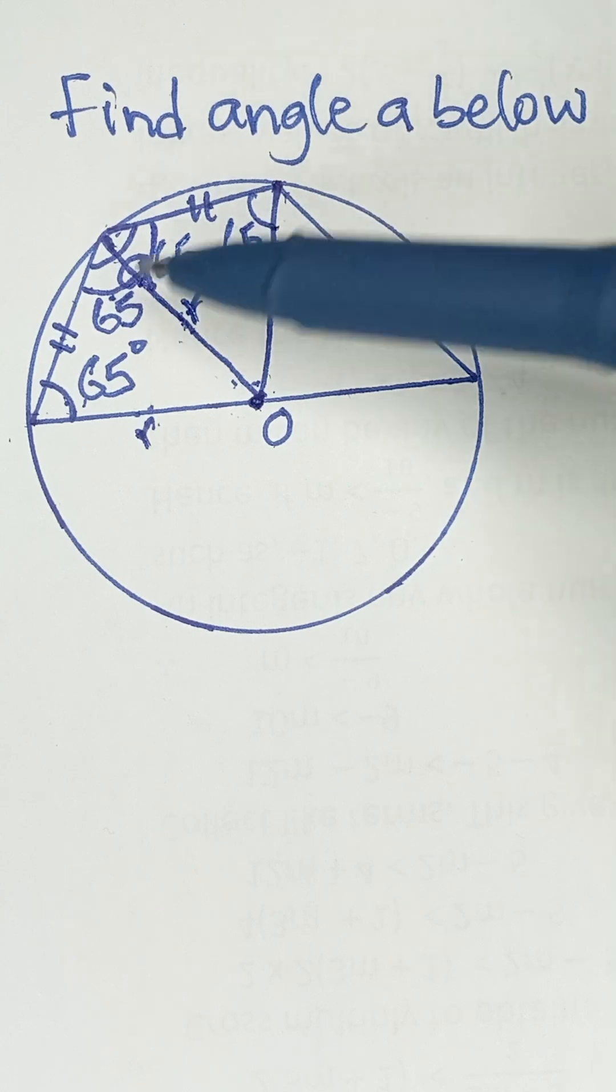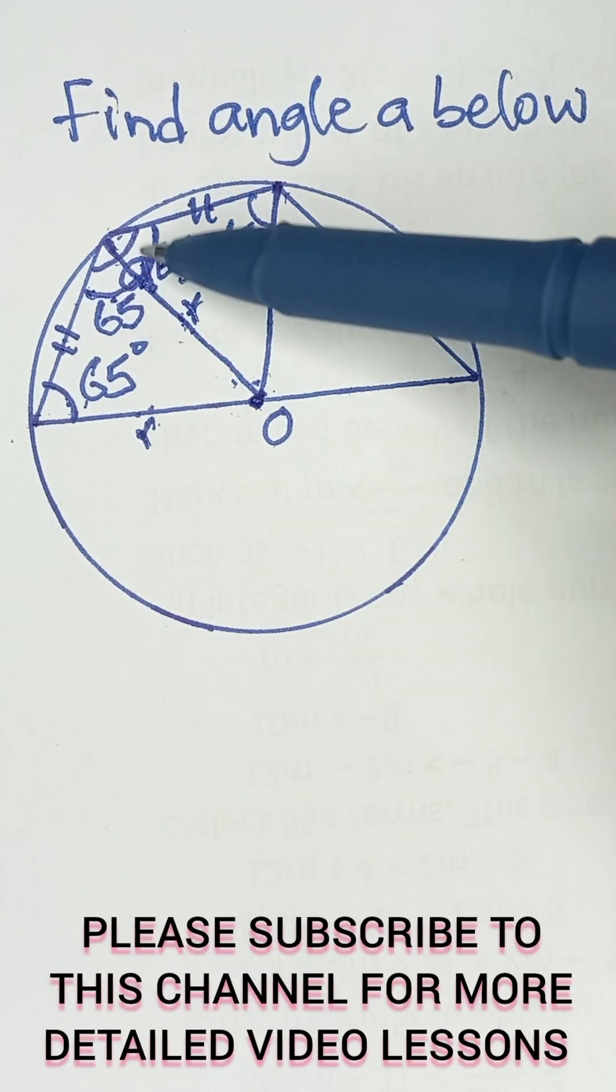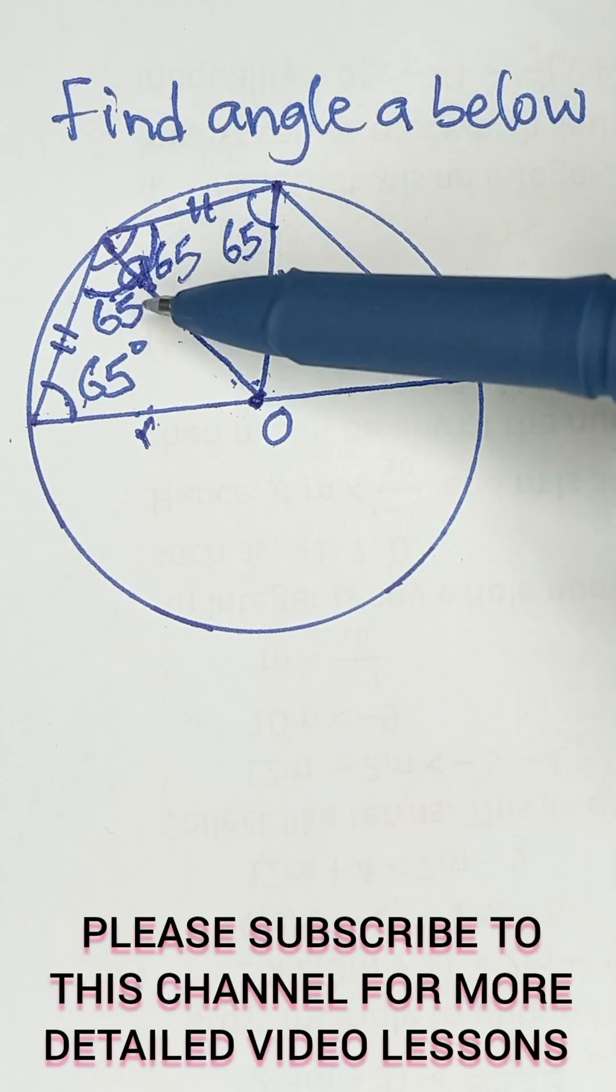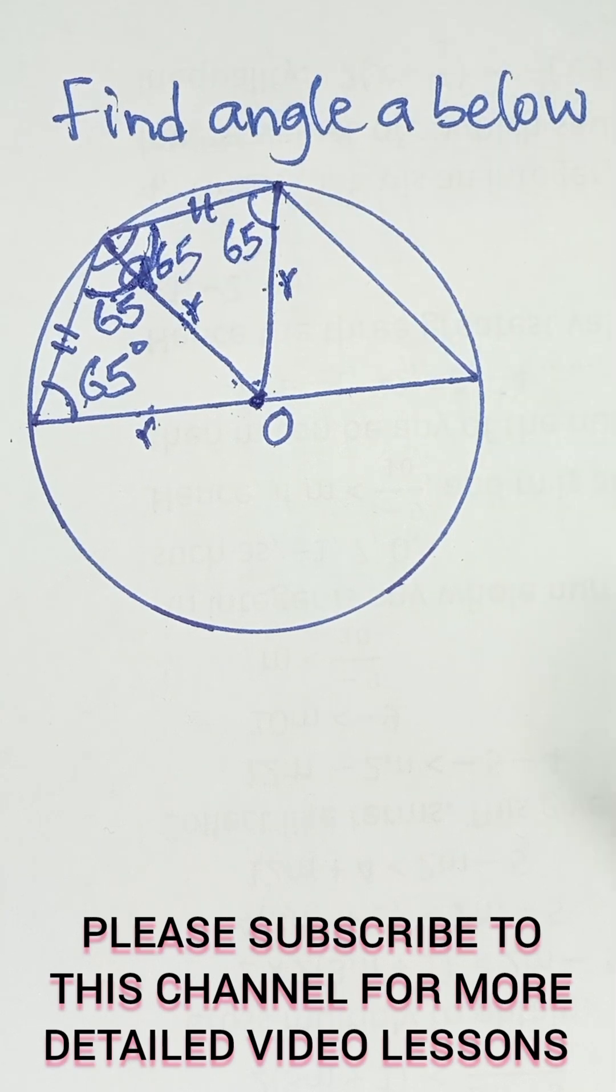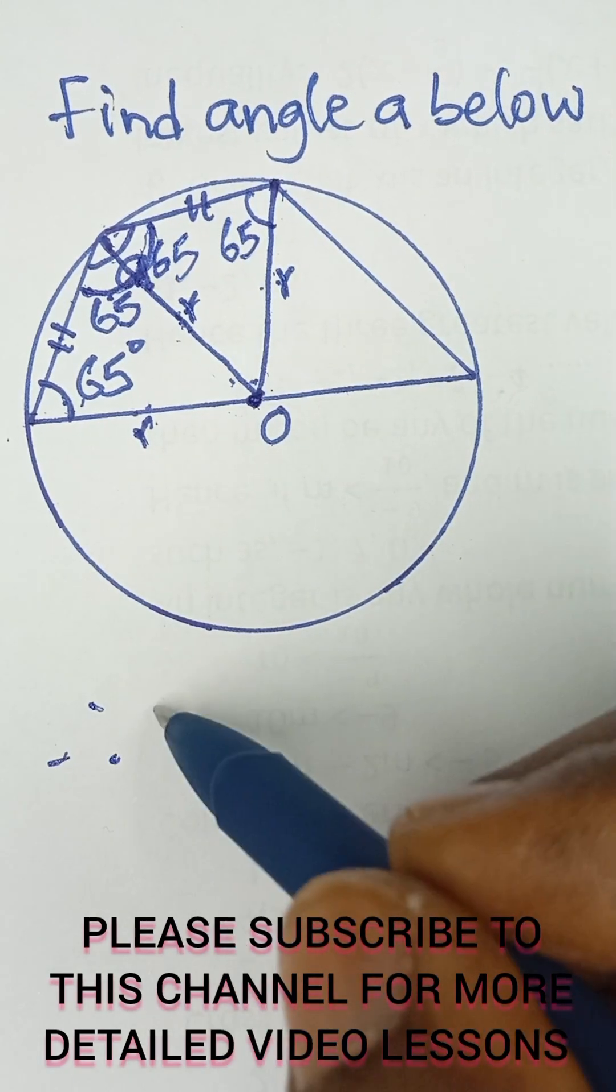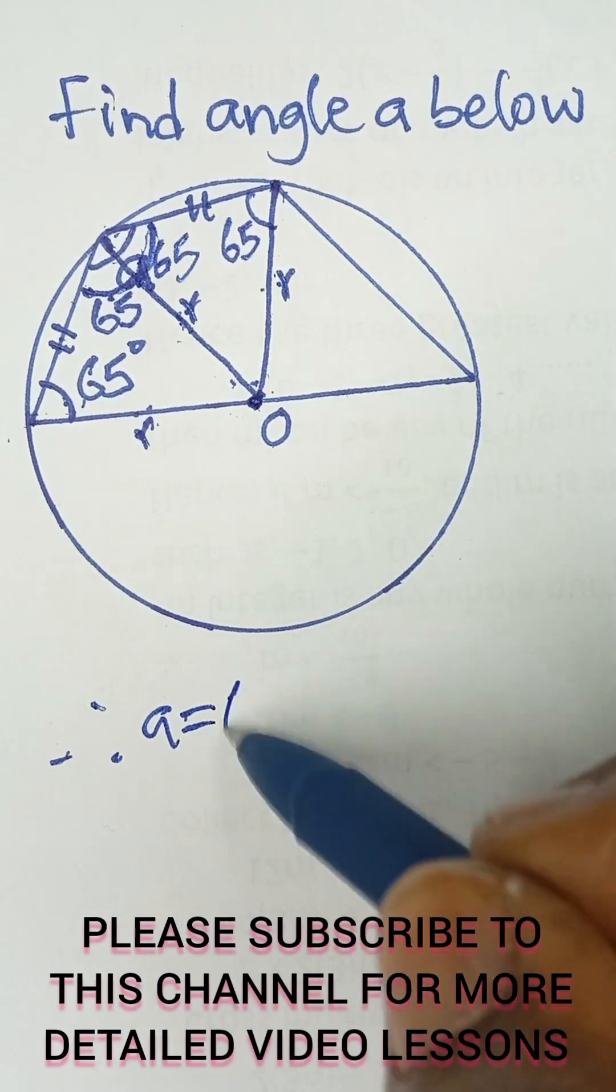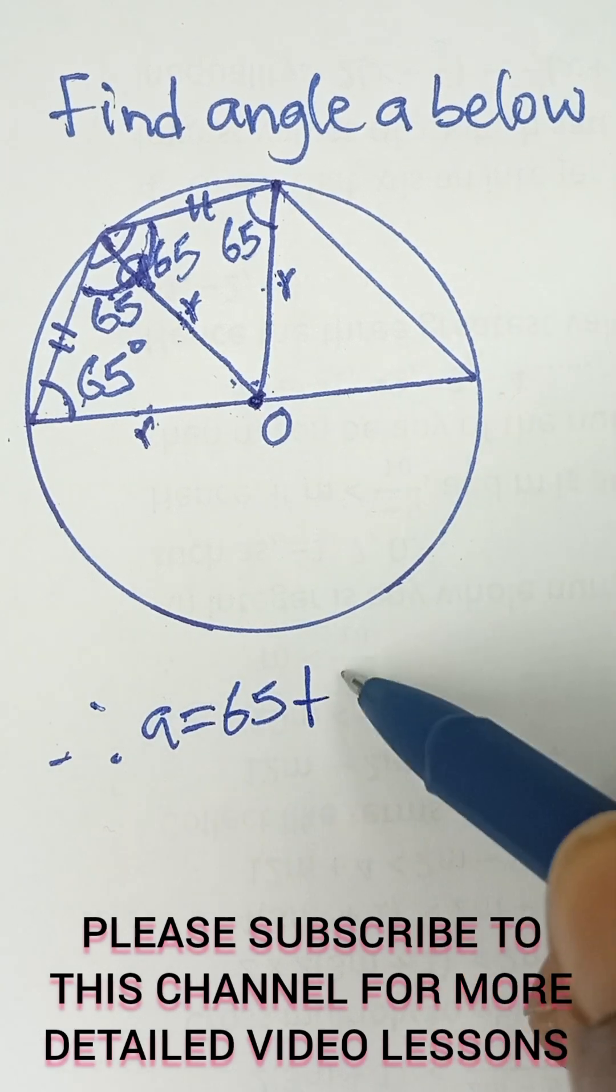So from there, we can conclude that the value of A, which is this full angle, will be this 65 plus this 65. So in conclusion, I can say A is equal to 65 plus 65,